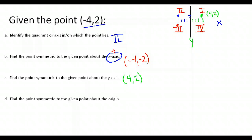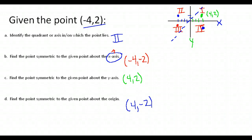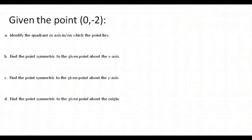Finally, the point symmetric about the origin. For origin symmetry, you change the sign of both the x and y-coordinates. So about the origin would be the point positive four, negative two. We took our point negative four, two and changed the sign of both coordinates. That reflects it over the origin. So that's one example — let's do another.